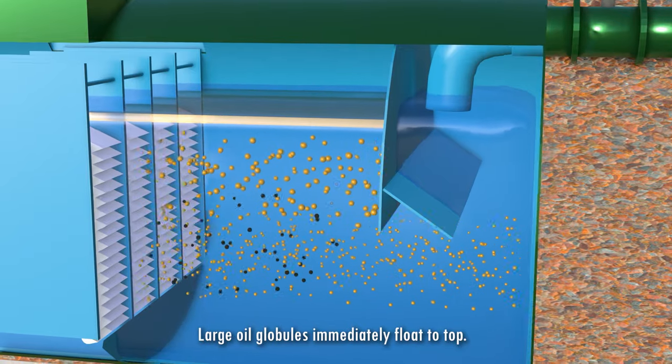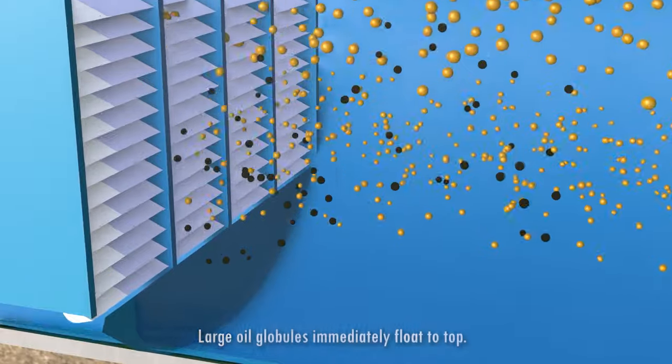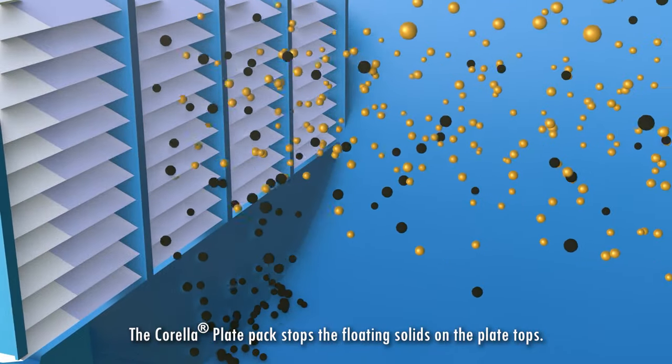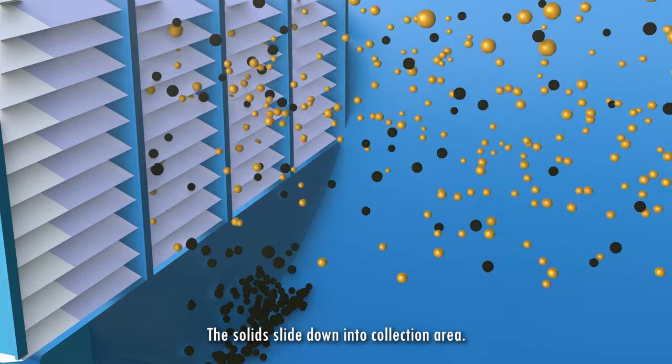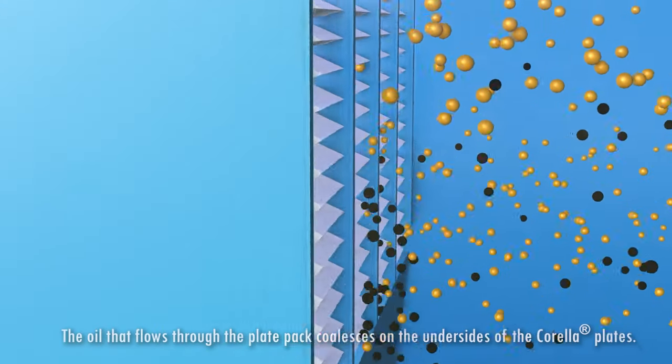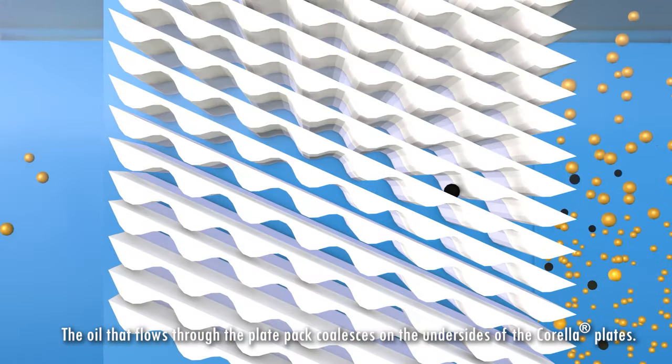As we move through the tank, large droplets float to the top of the water and the smaller particles move through the corella plates. Now they're flat on top and corrugated in the bottom, so solids that hit the flat top slide down and sink to the bottom.